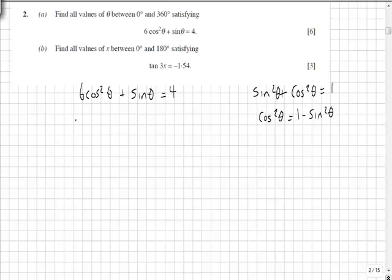So substituting in, we have 6 brackets 1 minus sin squared theta plus sin theta equals 4. Expand our brackets, 6 minus 6 sin squared theta plus sin theta equals 4.